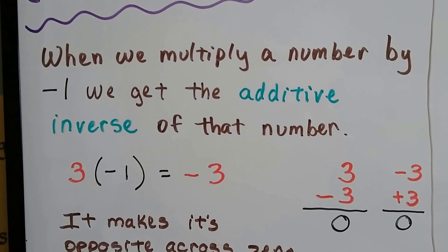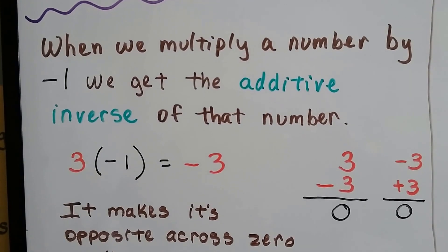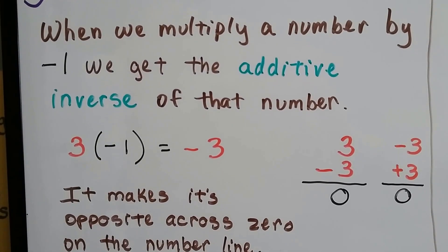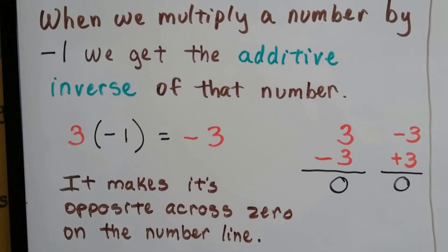When we multiply a number by negative 1, we get the additive inverse of that number. So 3 times negative 1 is going to give us negative 3.